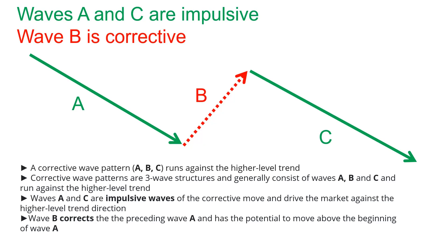Wave B corrects the preceding wave A and has the potential to move above the beginning of wave A. This last point makes it extremely difficult to trade corrective waves, because wave B can overshoot wave A. It also makes it very difficult to set stop losses, because it could happen that what looks like the beginning of a downtrend is actually just wave B correcting wave A — and wave B can actually go higher than the previous high, before wave C then moves lower than the end of wave A.